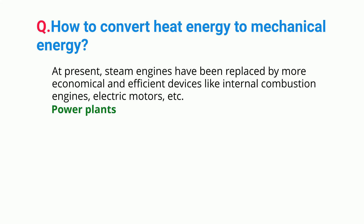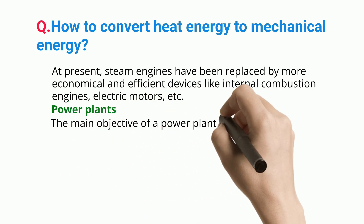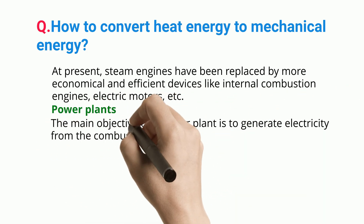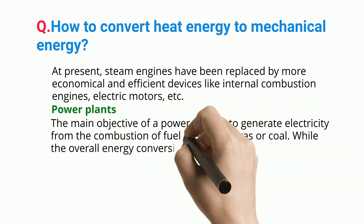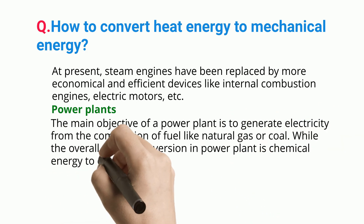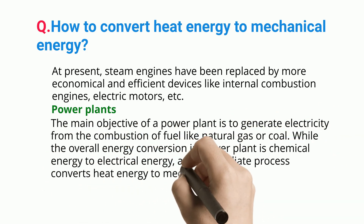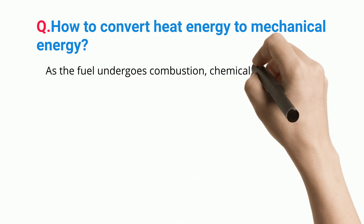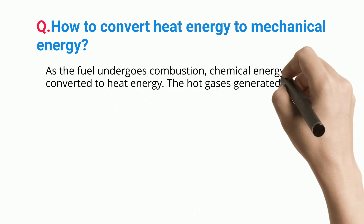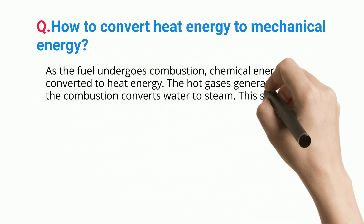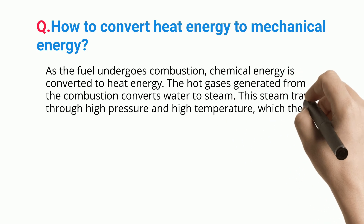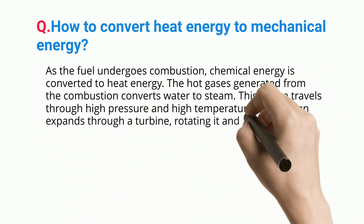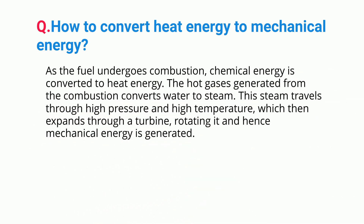Power Plants. The main objective of a power plant is to generate electricity from the combustion of fuel like natural gas or coal. While the overall energy conversion in a power plant is chemical energy to electrical energy, an intermediate process converts heat energy to mechanical energy. As the fuel undergoes combustion, chemical energy is converted to heat energy. The hot gas generated from the combustion converts water to steam. This steam travels through high pressure and high temperature, which then expands through a turbine, rotating it, and hence mechanical energy is generated.